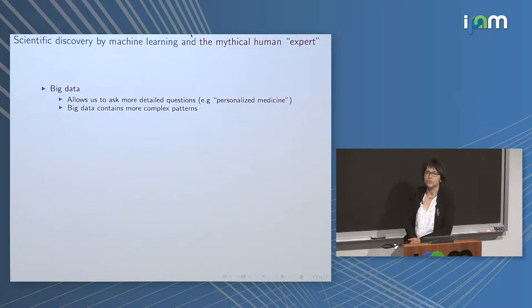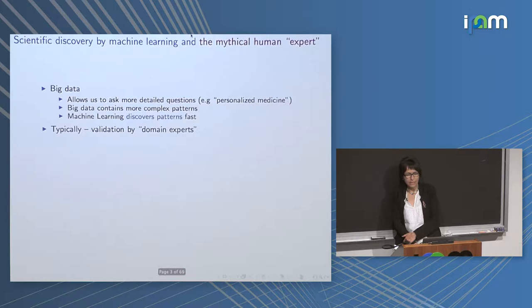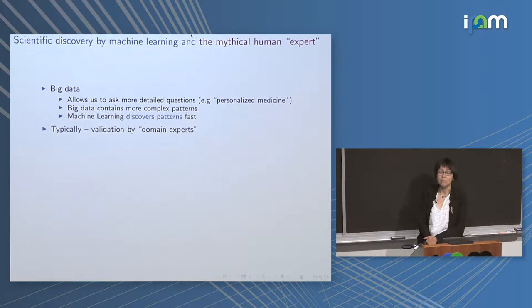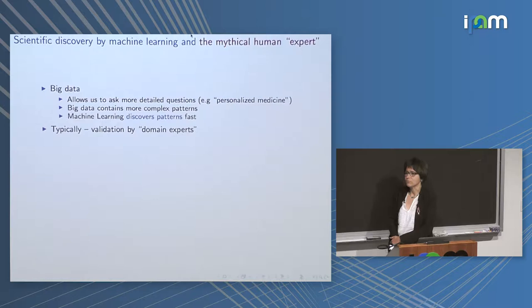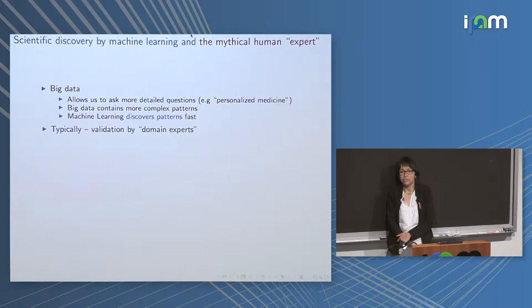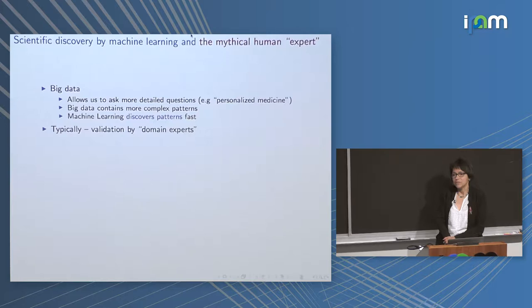Machine learning should not rely on expert validation. Big data is both a curse and a blessing — it allows us to learn more and use neural networks, and to discover many patterns in data. But not all patterns are generalizable, not all patterns are science. Machine learning is very good at discovering patterns fast, but the bottleneck becomes discovering which discoveries are real, generalizable, and not dependent on artifacts of the data, the algorithm, or the data collection.